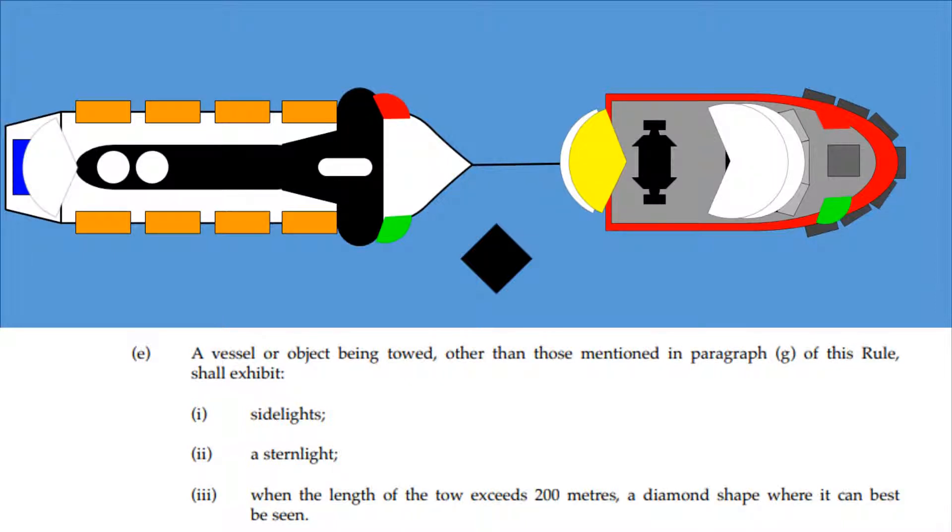So this is the vessel being towed now. The masthead light indicates that we're under our own propulsion. As that's not the case because we're being towed, we don't show the masthead light. But we are still a vessel and we're still making way, so we do need our stern light and our sidelights.